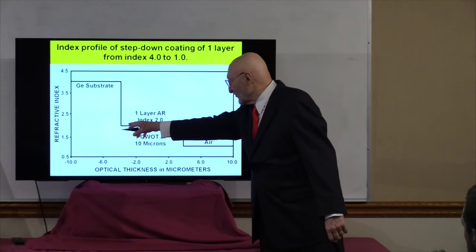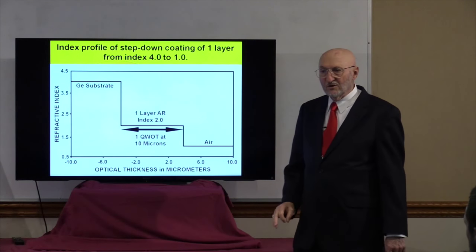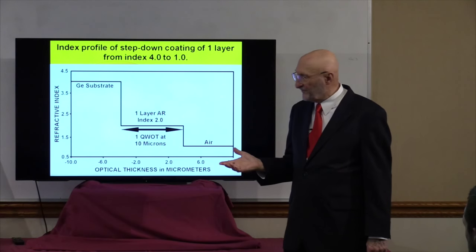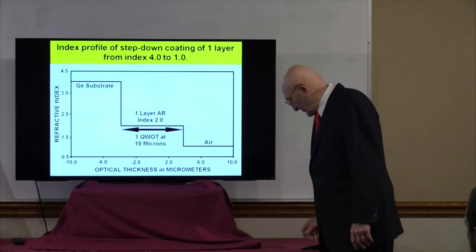So a quarter-wave of index 2 will be a perfect AR for one wavelength and one angle. Simple enough.